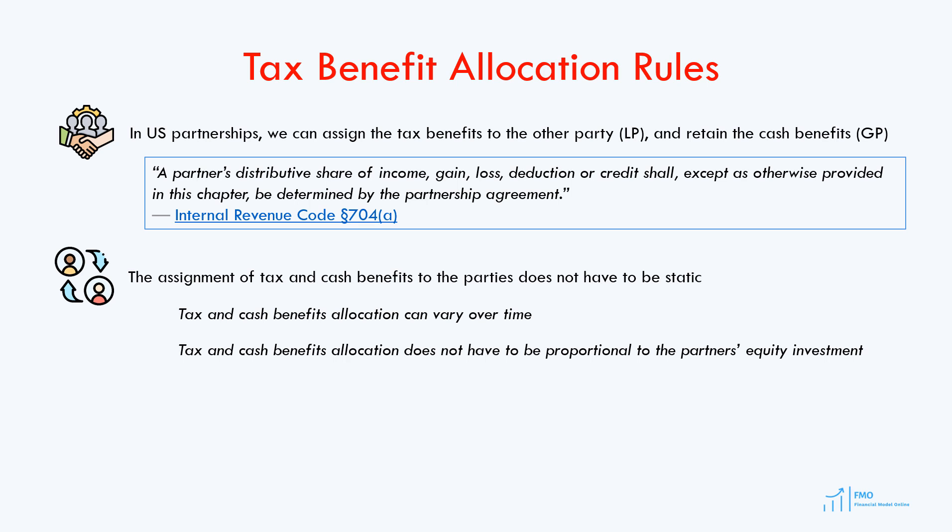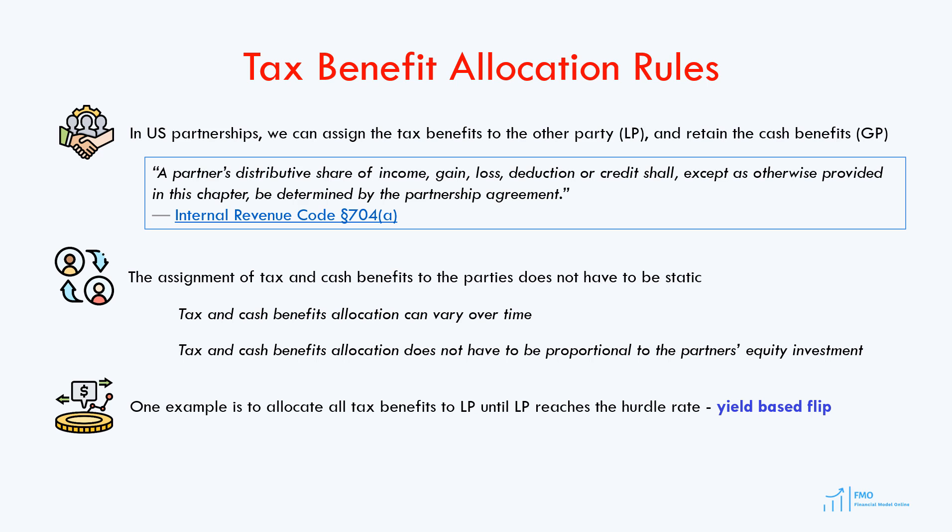One example where allocation is not static is to distribute the tax benefits to the limited partner until the limited partner reaches its hurdle rate. Once the hurdle rate is reached, we can change the tax benefit allocation rules. This is referred to as a yield-based flip — when we flip the allocation based on the required yield achieved by the limited partner.